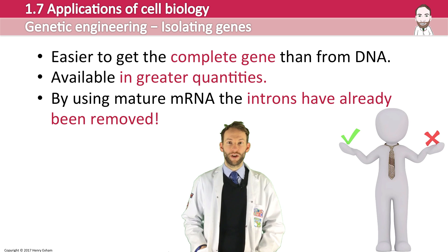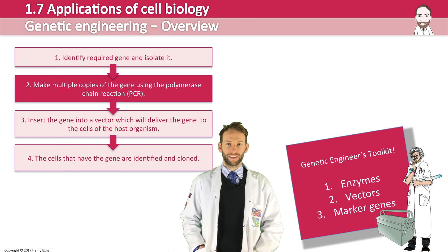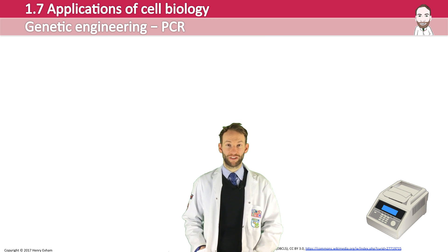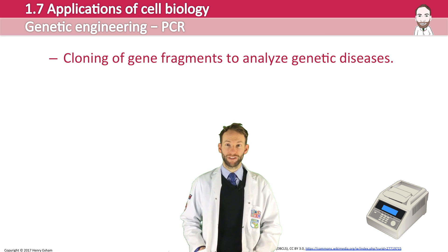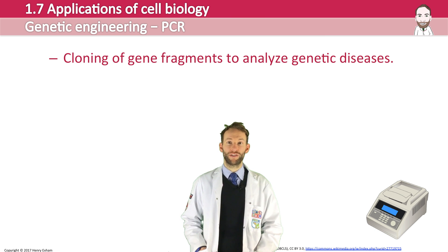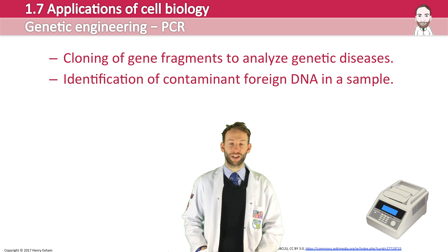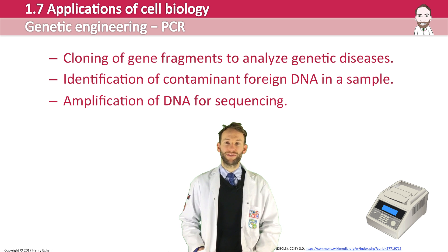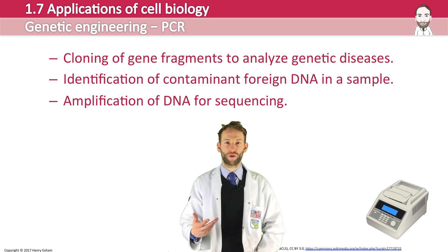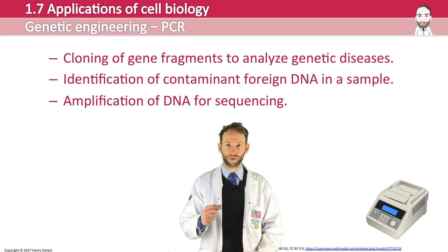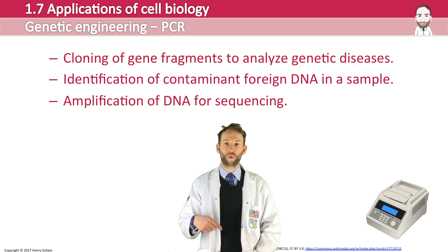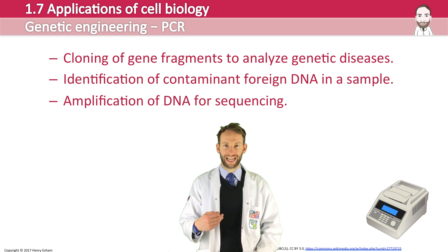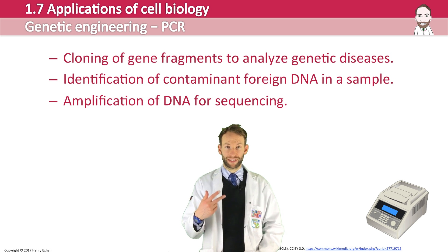Now that we have the desired gene, we need to make sure we have enough of it. The polymerase chain reaction, or PCR, has many applications in gene technology — for example, cloning of gene fragments to analyse genetic diseases, identification of contaminant foreign DNA in a sample, and amplification of DNA for sequencing. This reaction multiplies a small DNA sample, rapidly producing large quantities — lots and lots of copies of that DNA. It has three steps and requires a thermal cycler, some primers, free DNA nucleotides, and DNA polymerase.